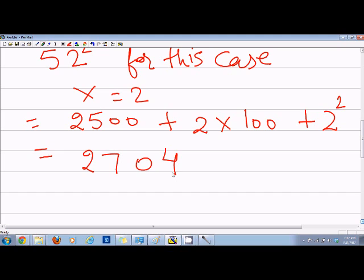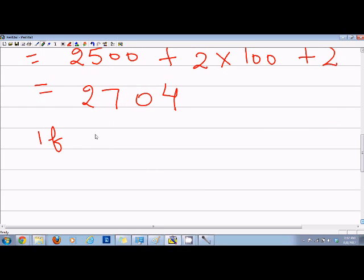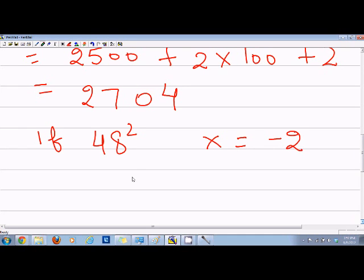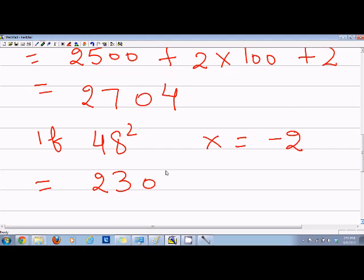if we have number of 48 square, then x is equal to minus 2. And then instead of adding 2 here, we will be subtracting 2. So we will have 23. And then square doesn't matter, it's negative or positive. So answer will be 2304.